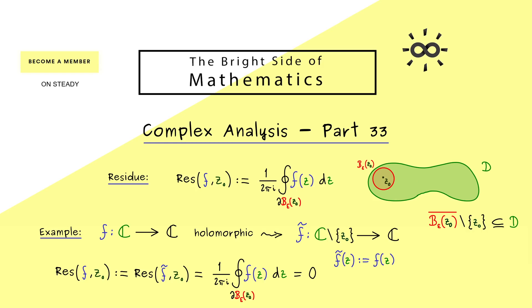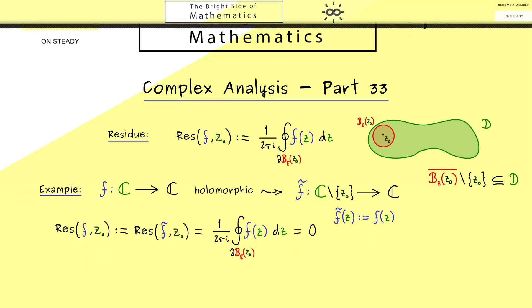This definition will make some formulas simpler later on. Moreover, we can make this property even more general: roughly speaking, if the values of the function don't explode around the isolated singularity, the residue has to be 0.